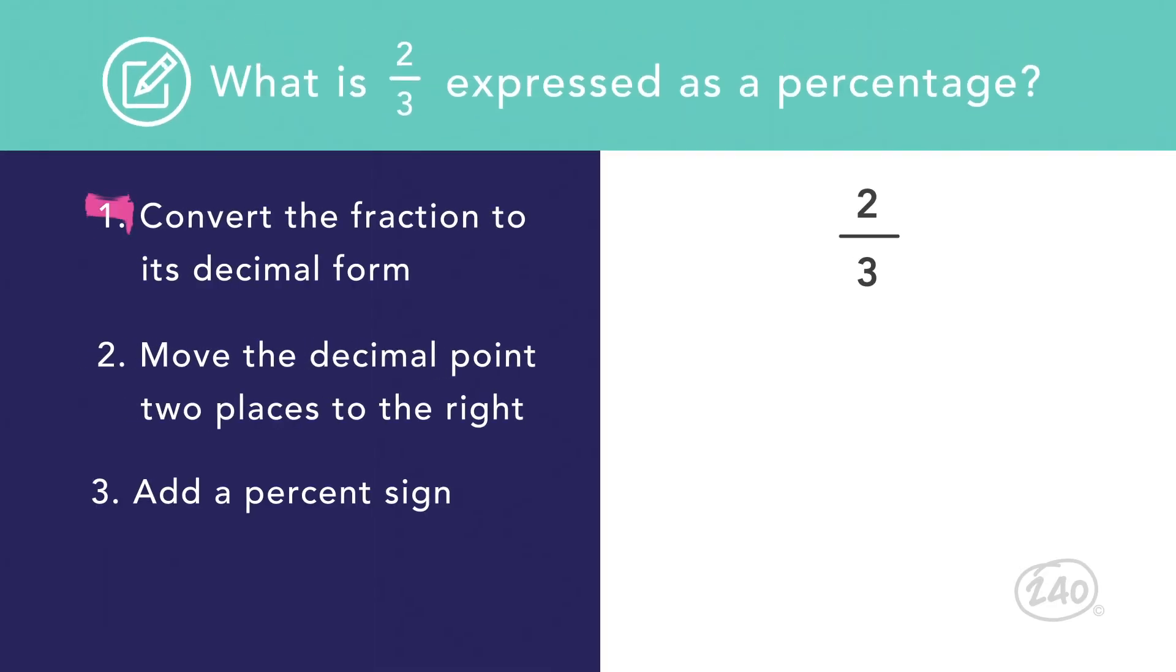How do we write two thirds as a percentage? First, we'll convert the fraction to its decimal form by dividing the numerator by the denominator. Using a calculator will show us that two thirds equals zero point six six repeating.